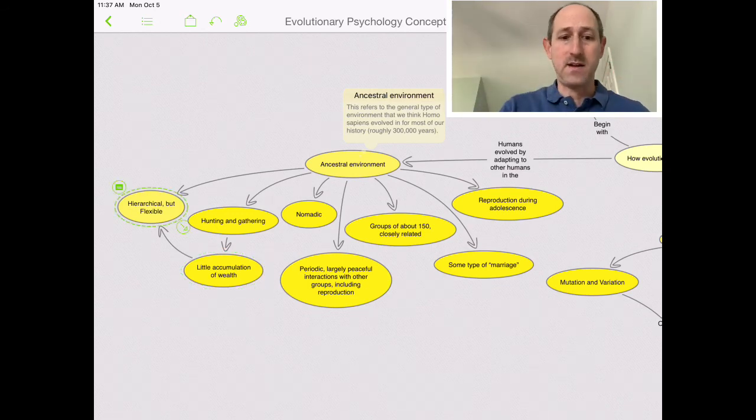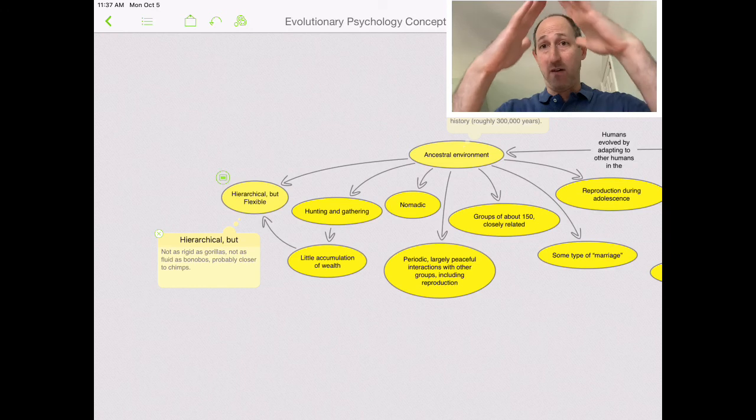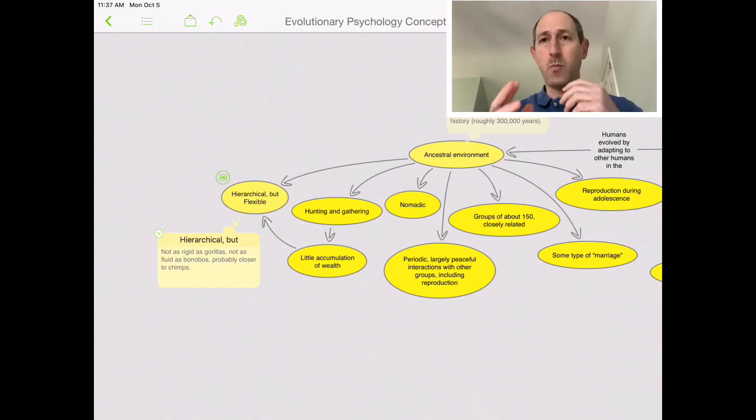That is to say, if we look at our hierarchy compared to other primates, other great apes, we know that the gorillas have a very steep hierarchy with the silver-backed ape male at the top, but bonobos have a very fluid, flat hierarchy. We're probably closer to chimps. There is a hierarchy, but it's not set in stone.